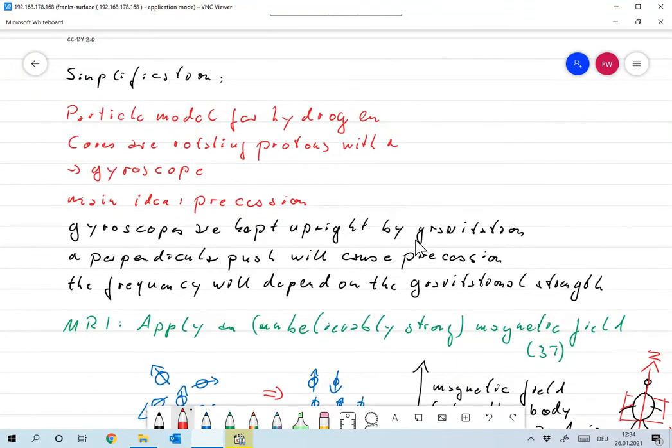And that will mean I will not do everything 100% physically correct. So again, I hope that no physicists are present. Okay, so the simplification is I'll take whatever model I like, just to make clear what MRI finally does. And that means for the body I will assume a particle model. I will assume that in the human body there are hydrogen cores, so protons, which are rotating around an axis.